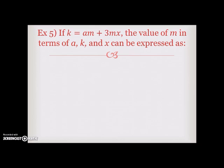Example 5. If K is equal to AM plus 3Mx, the value of M in terms of A, K, and X can be expressed as. So here we look at our equation, and the first thing you want to ask yourself, is it in standard form? In this case it is. Next, you want to ask yourself, can I take out a GCF? And you can. On the right side, you can take out a GCF of M. So you will be left with K is equal to M times A plus 3x. Because AM divided by M gives you that A. And positive 3Mx divided by M will give you the positive 3x.